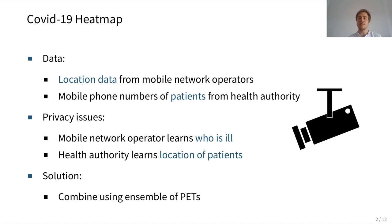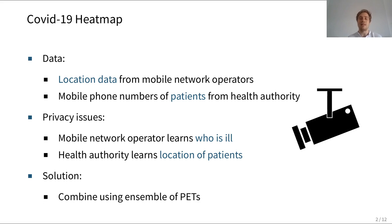To create this heat map of aggregated location data of infected individuals, we want to use two datasets. On one hand, we use location data collected from mobile network operators, and on the other hand, health records from health authorities that know which individuals in the population are actually infected. However, we cannot trivially combine these two datasets to create our heat map because we are dealing with very privacy-sensitive data. So our goal was to construct a protocol which produces this heat map while protecting both datasets.